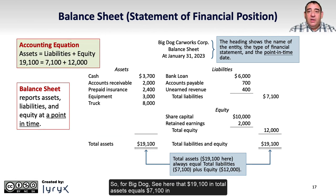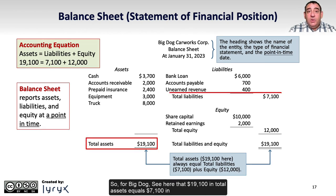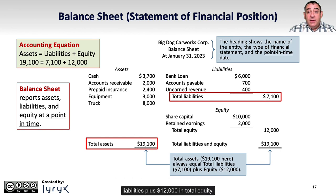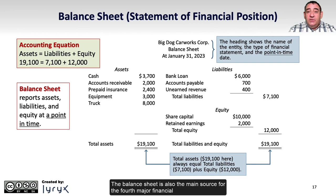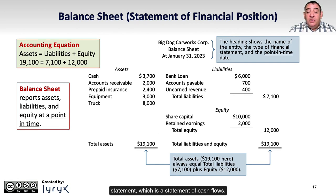So for Big Dog, we can see that $19,100 in total assets equals $7,100 in liabilities plus $12,000 in total equity. The balance sheet is also the main source for the fourth major financial statement, which is the statement of cash flows.